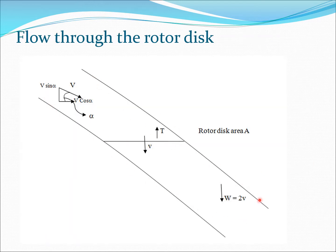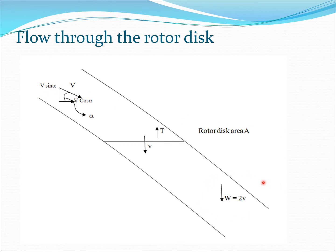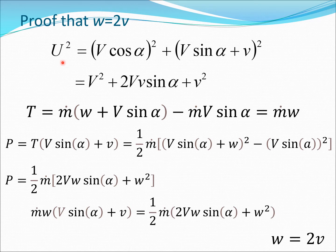Let's look at the flow through the rotor disc. The rotor is generating thrust, and there is a velocity going through it. The forward speed velocity has two components: a vertical component given by the sine of the tilt angle and a horizontal component given by the cosine, which is in the plane of the rotor disc. What is going through the rotor disc is v plus V·sin(α), and I will show why w = 2v just as we found in the vertical flight case.